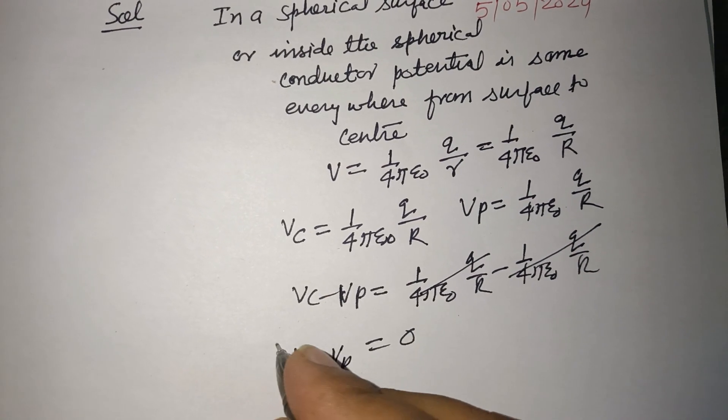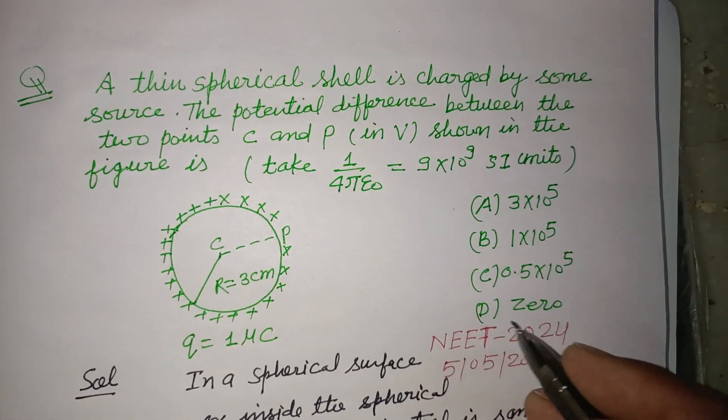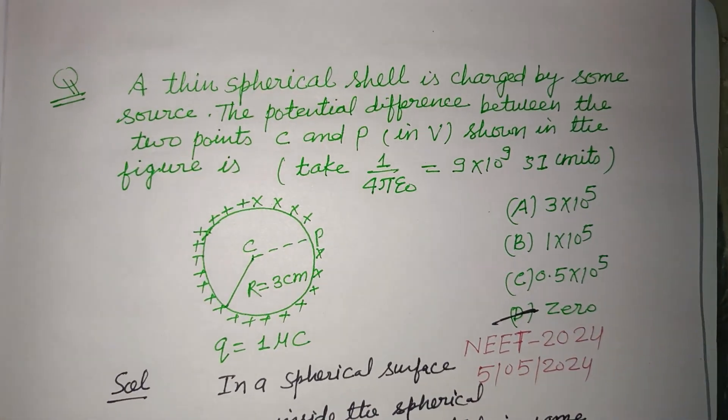So Vc minus Vp is 0, which is found in option D. Therefore option D is correct for this question.